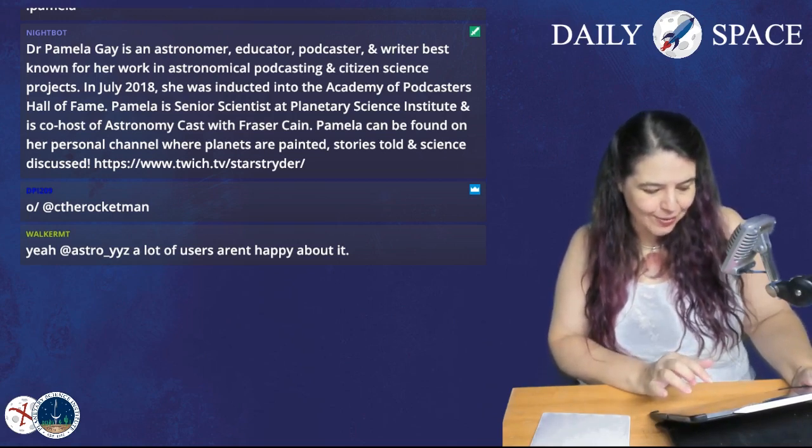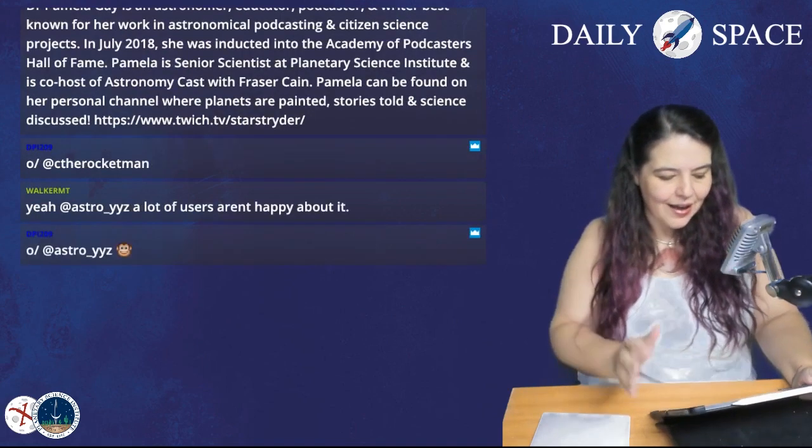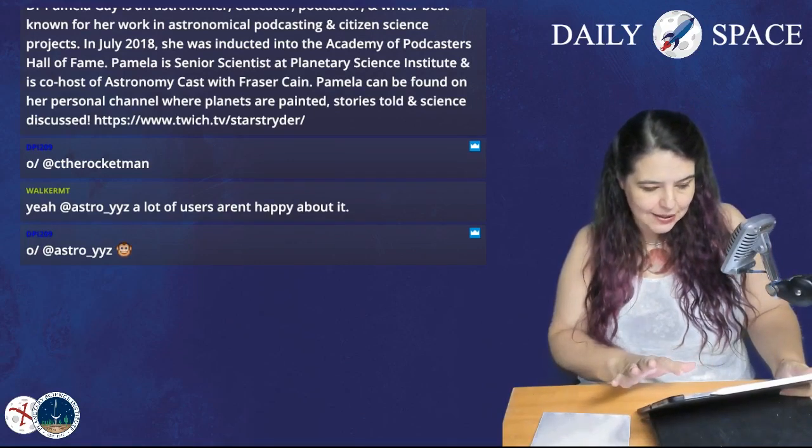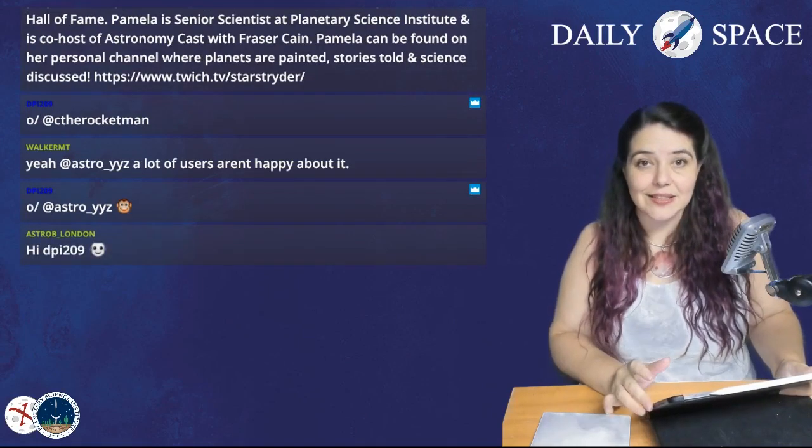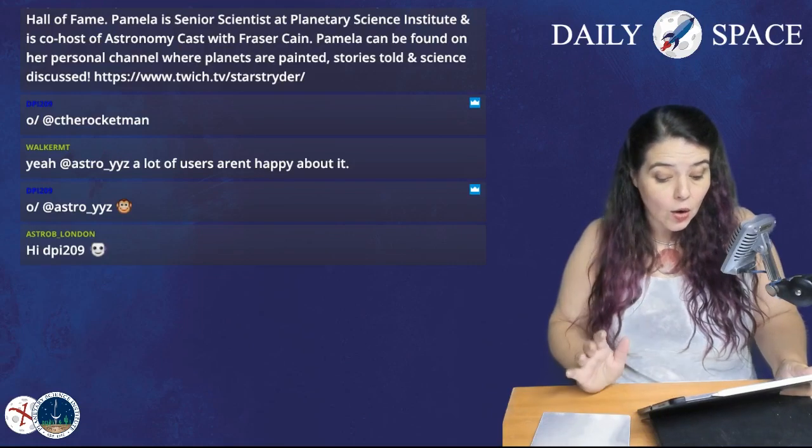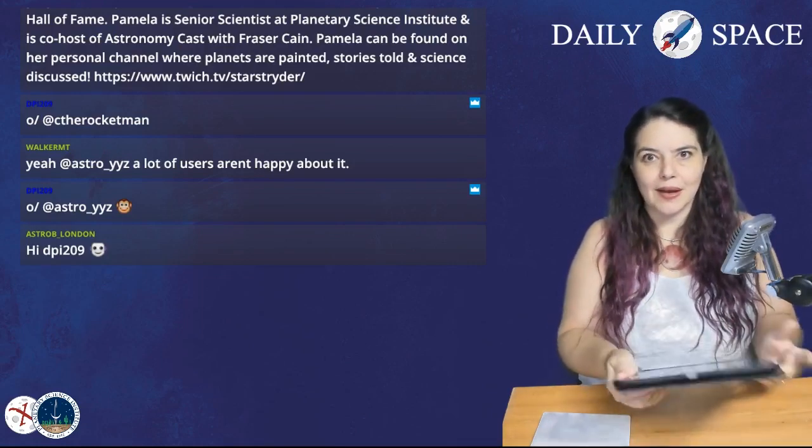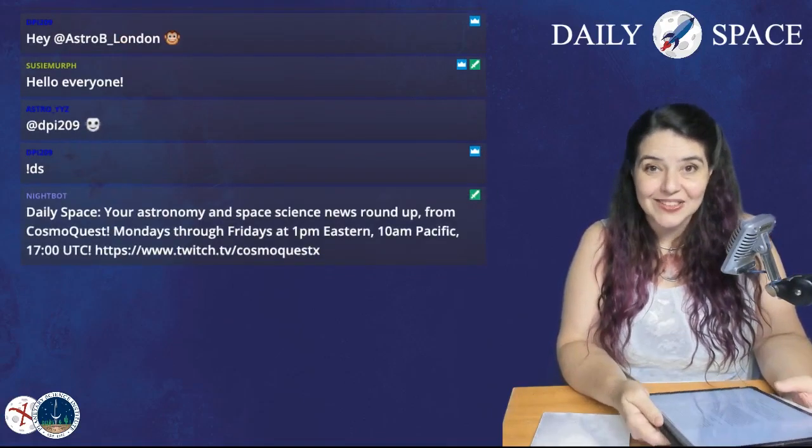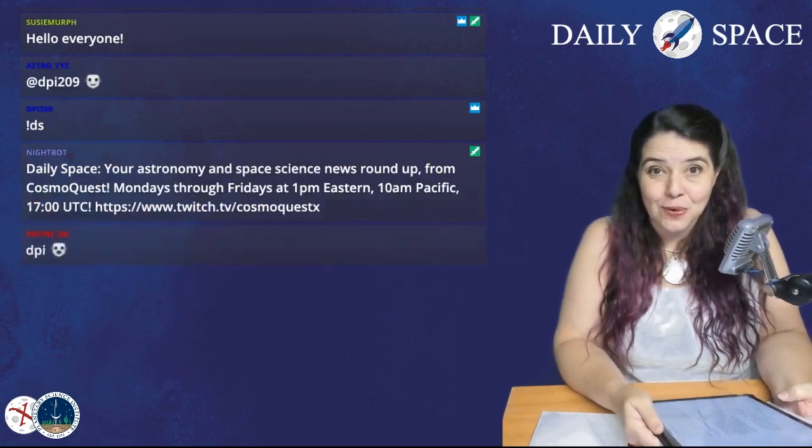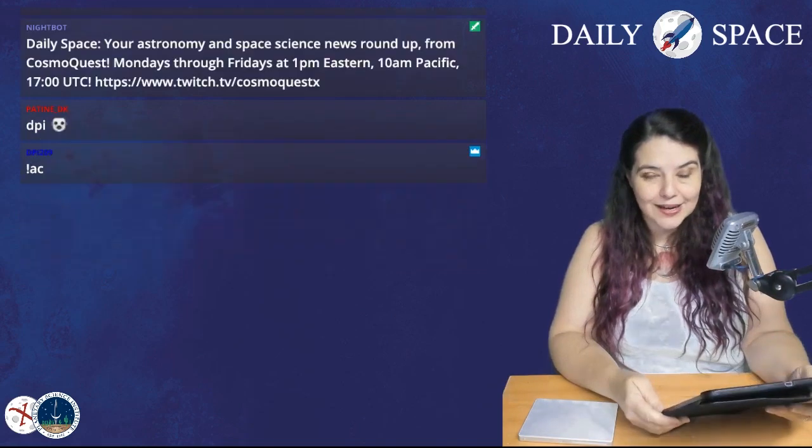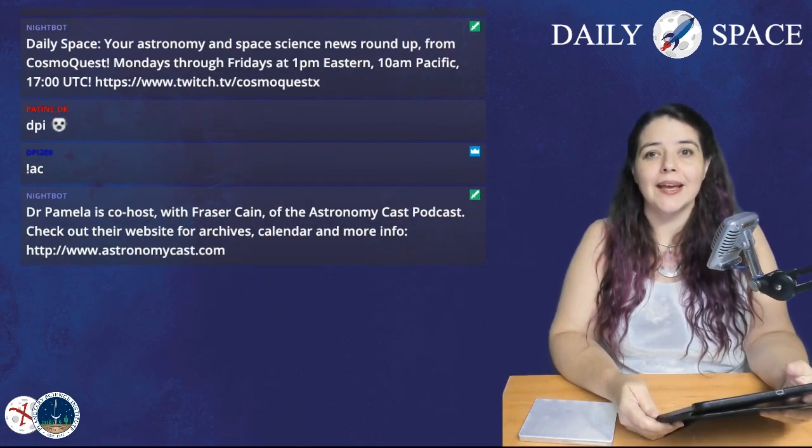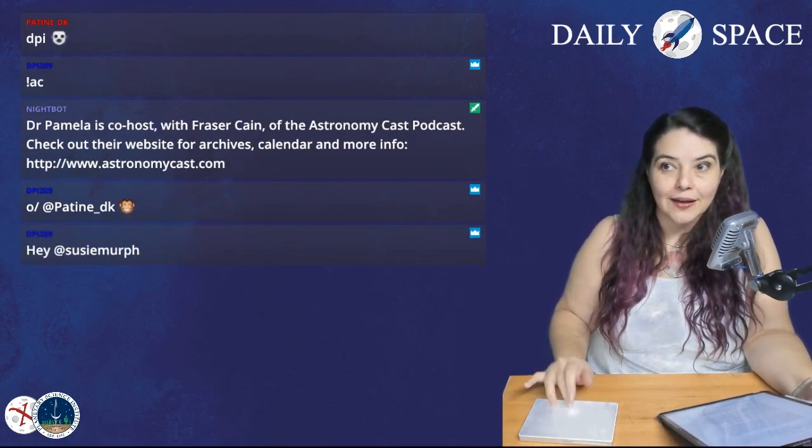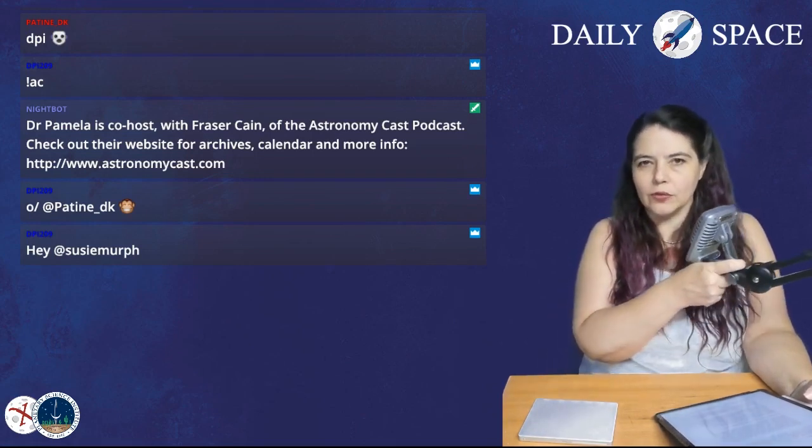We bring you this show as well as all of our other episodes of The Daily Space most Mondays through Fridays at 1 p.m. Eastern, which is 10 a.m. Pacific, 6 p.m. London time. We also do Sunday Science Hour and co-stream shows like Astronomy Cast, which will be coming out later today at 3 p.m. Eastern, noon Pacific. But right now, the reason we are here is Astronomy News. And oh my goodness, so many really complicated, cool stories to bring you.